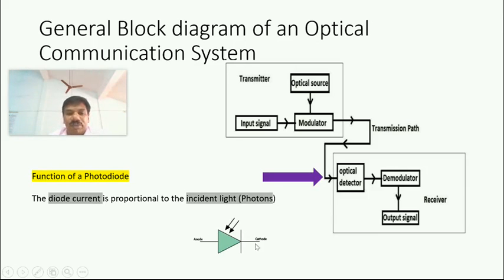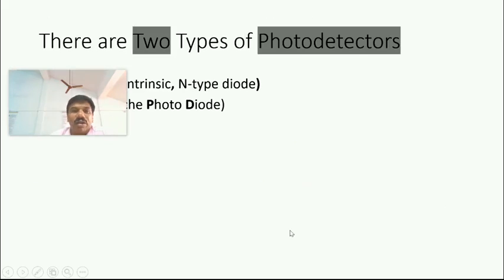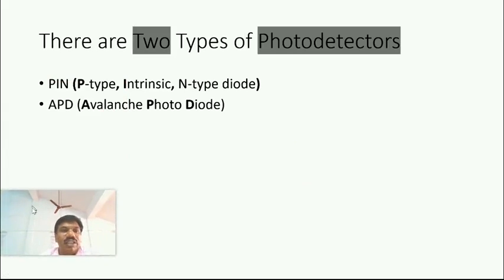This is the general symbol of a photodiode. If you forget about these arrows, the symbol is exactly the same as your diode - anode part and cathode part. The arrow symbol represents that light is incident for our diode, so there is current. If we are looking at the symbol of LED or laser, the arrows are moving out because they are emitting light. Here it is absorbing light and generating current.